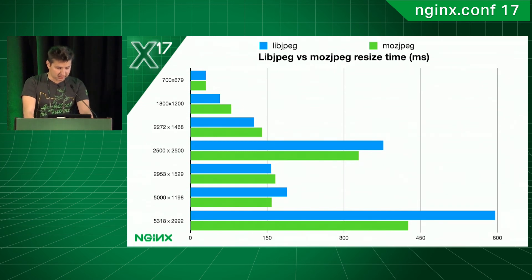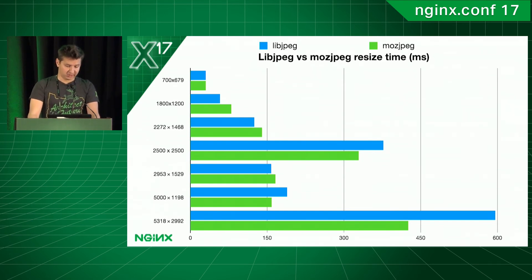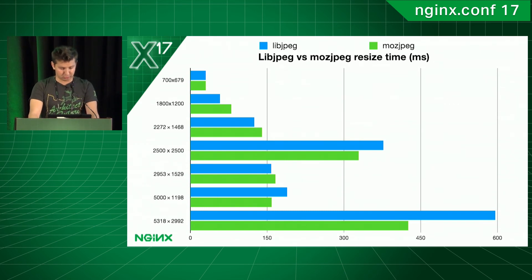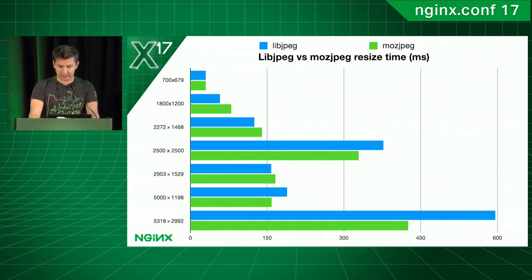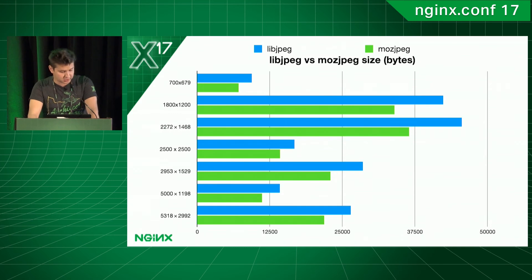Since MozJPEG is a fork of LibJPEG-Turbo, I expected gains in both processing time and file size. But here, the situation is different. As you can see from the graph, I got a noticeable speed win only for large images; for smaller images, the difference is insignificant — around 3%. However, speaking of size optimization, the results are much better. The average image size difference is approximately 20%.